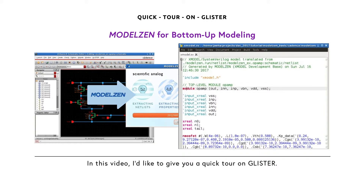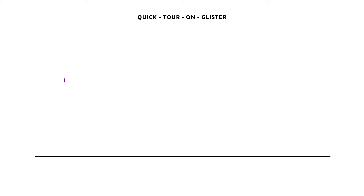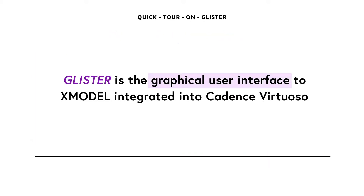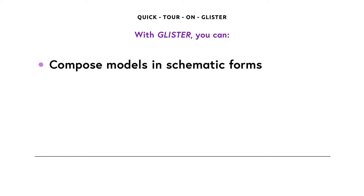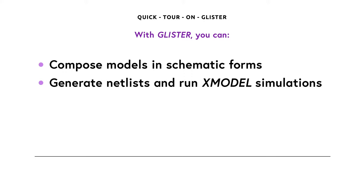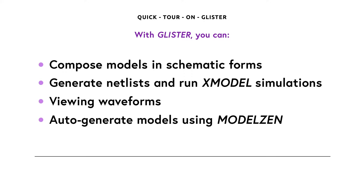In this video, I'd like to give you a quick tour on Glister. Glister is basically a graphical user interface to X-model, integrated into the Cadence Virtual Suite design environment. With Glister, you can do most of the X-model tasks in a graphical environment, such as composing models in schematic forms, generating netlists and running X-model simulations, viewing simulated waveforms, and auto-generating models from circuit schematics using ModelZen.